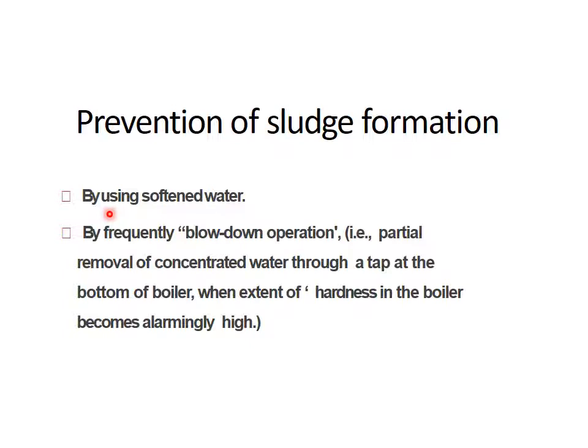Prevention of sludge formation: if we use soft water, sludge formation will not occur. By frequent blowdown operation — i.e., partial removal of concentrated water through a tap at the bottom of the boiler when the extent of hardness becomes alarmingly high — and by continuously removing the sludge from the bottom of the boiler using a tap, we also increase the efficiency of the boiler, because we are continuously removing sludge formed within the colder part of the boiler.